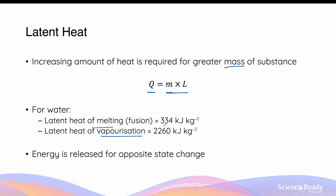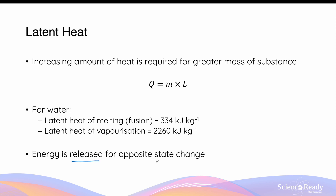For water, the latent heat of fusion is 334 kJ/kg and the latent heat of vaporization is 2260 kJ/kg. This means we need exactly 334 kilojoules of energy to transition one kilogram of ice into liquid water. The energy required to convert liquid water into steam is much higher at 2260 kilojoules per kilogram. Note that energy input is required going from solid to liquid or liquid to gas, while the same amount of energy is released when going in the reverse direction.